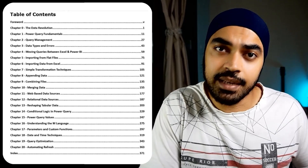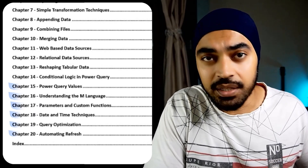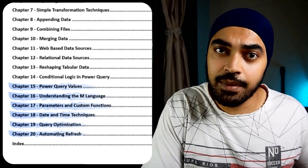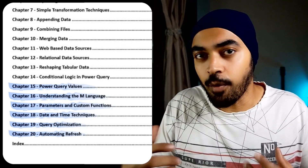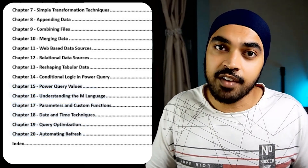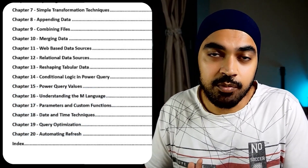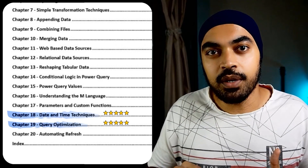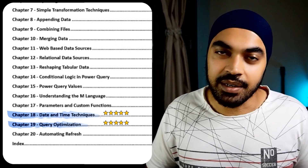If you've moved from the basic to the intermediate level, started to write a bit of M code, and are pretty comfortable with the Power Query user interface, you can still benefit from this book. There's decent coverage on explaining what the M language is, its different structures, and different objects. There are also chapters on optimizing queries, which I found very helpful. My personal two favorite chapters were optimizing queries and working with date-time techniques.